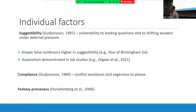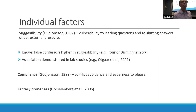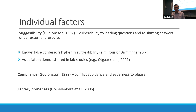Compliance is a separate but related term referring to how conflict-avoidant one is and how eager one is to please — essentially vulnerability to peer pressure. Unlike suggestibility, with compliance one knows what they're saying is incorrect but does so to comply with the authority figure or group. Suggestibility is a better predictor than compliance of vulnerability to false confessions, but compliance is still a significant predictor.